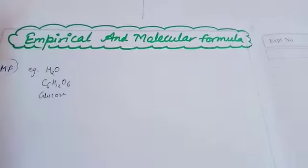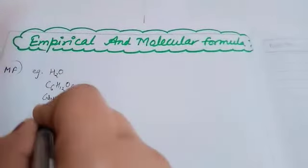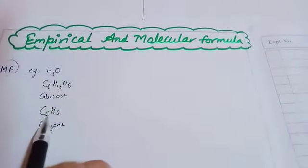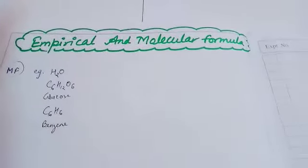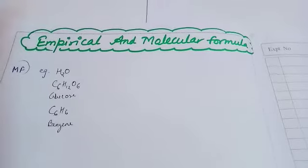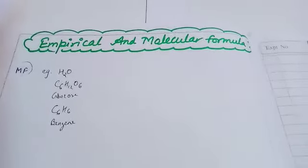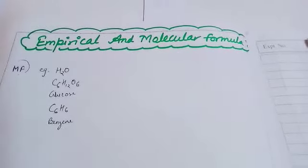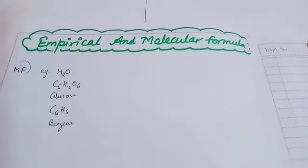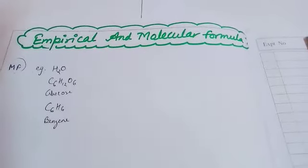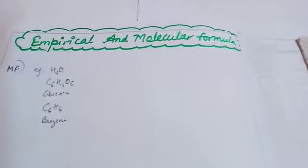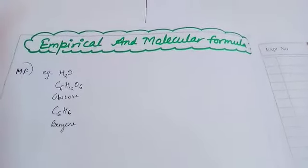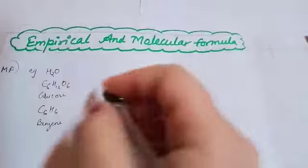Another example: benzene is C₆H₆. That is a molecular formula, not a structural formula — carbon is 6 and hydrogen is also 6. So the simple molecular formula gives the actual number of various elements present in one molecule of the compound. Now another concept is empirical formula, which gives the simplest whole number ratio of the atoms of various elements present in one molecule — it is not the actual number of elements present in the compound, but the simplest ratio.